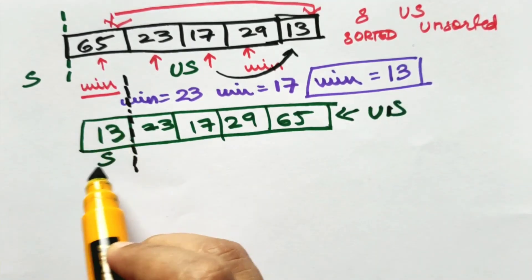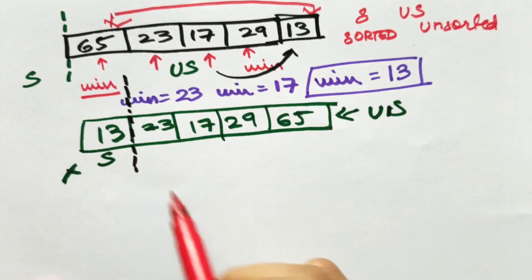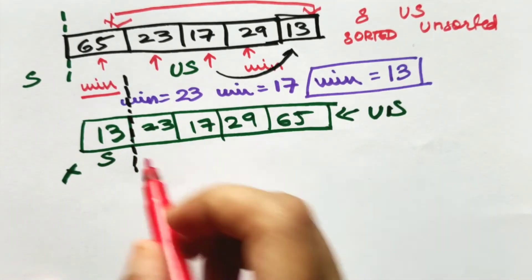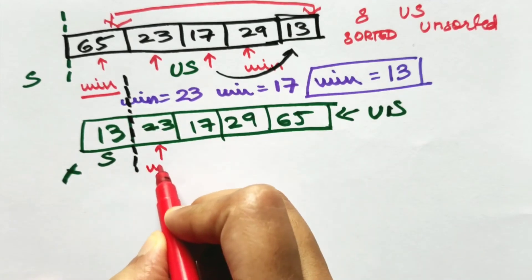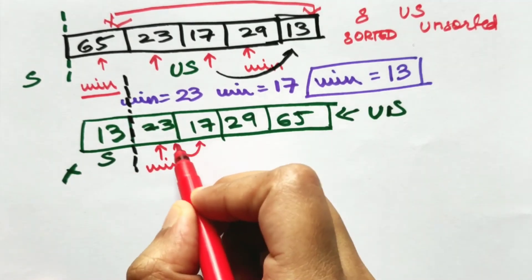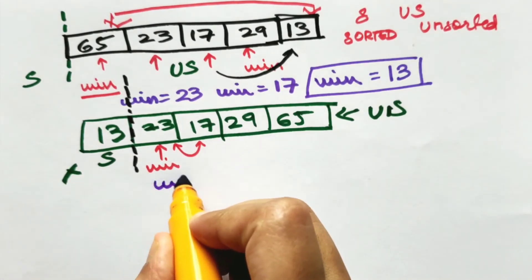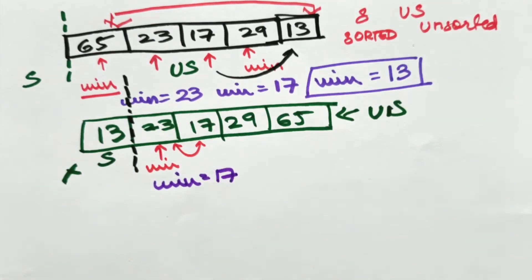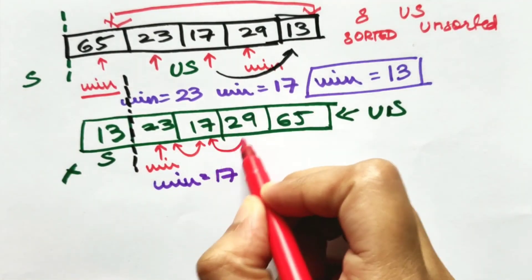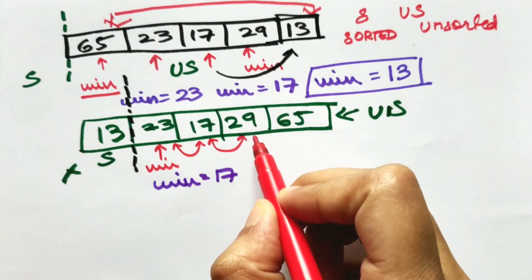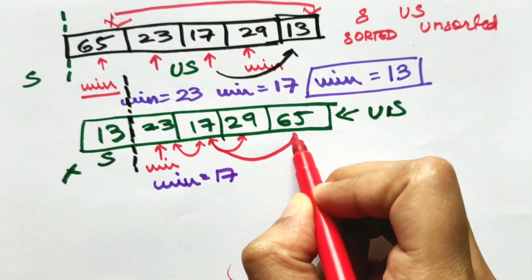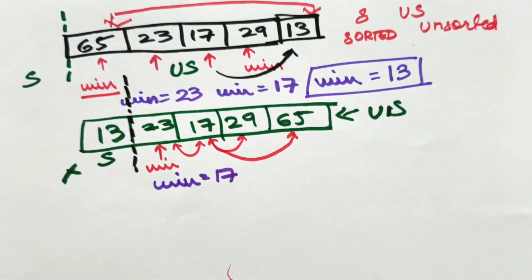You have sorted and this is basically your unsorted. Now you just leave this alone. Don't do anything with it. Now you only concentrate on this unsorted half. Again same task. Keep checking. 23 make that minimum. Next you check 23 and 17. 17 is your minimum value and hence you overwrite minimum equal to 17. Then check for 17 and 29. No change. Then 17 and 65. Again 17 is always smaller.